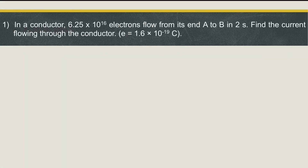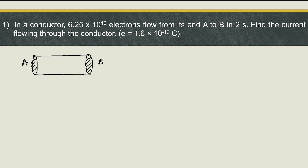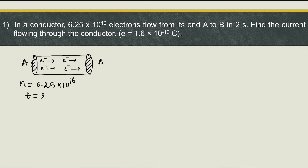First problem: in a conductor, 6.25 × 10¹⁶ electrons flow from its end A to end B in 2 seconds. Let me first draw a conductor — this is end A, this is end B, and as per the question electrons are flowing from end A to end B. How many electrons? 6.25 × 10¹⁶ electrons. In how much time? In 2 seconds.